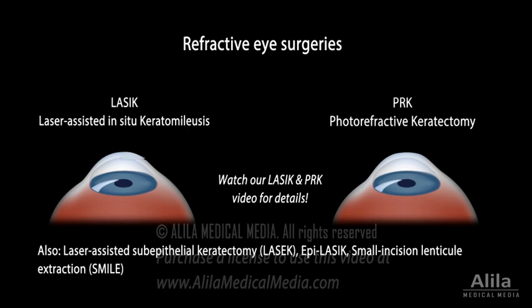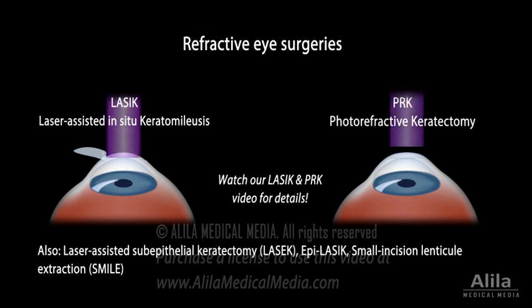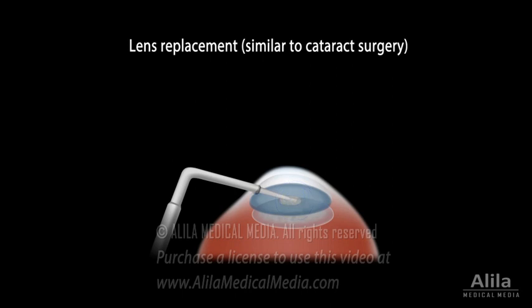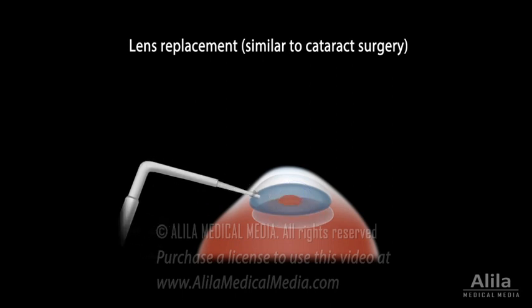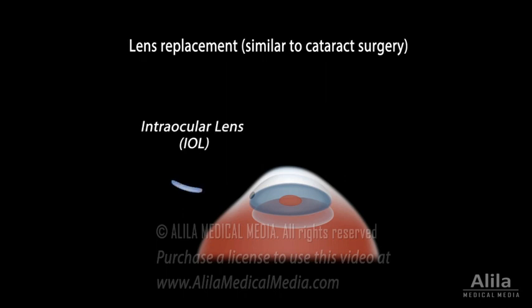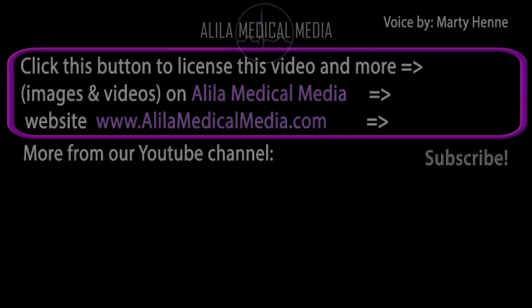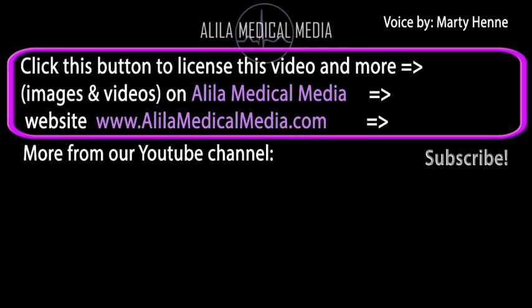Refractive eye surgeries use laser to reshape the cornea and can treat most cases of astigmatism, both corneal and lenticular. Several types of refractive surgeries are available, each with their pluses and minuses. Lenticular astigmatism can also be treated with lens replacement in a procedure similar to cataract surgery, which is particularly helpful when the patient also has a cataract, as it can fix both problems at once. Patients with corneal astigmatism and cataract may also benefit from cataract surgery with toric intraocular lenses.